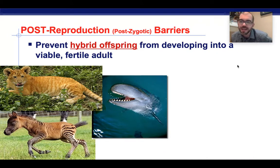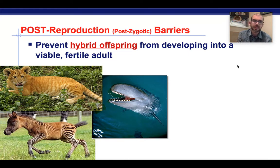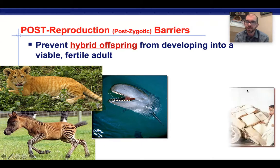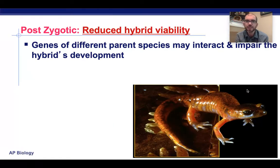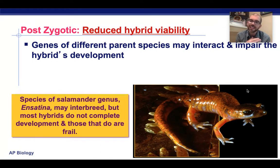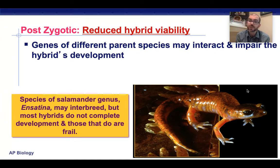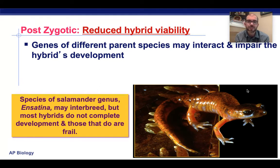Now let's look at postzygotic barriers — instances when sperm does combine with egg, but the species isn't able to continue on. This is how we get hybrids like the tigon, the zorse (a zebra and a horse), and a wolphin (a whale and a dolphin). The first postzygotic barrier is reduced hybrid viability, where sperm meets egg and you do produce offspring, but the offspring are so unviable and weak that they don't survive to reproductive age. This happens a lot with salamanders — sperm and egg of different species combine in fresh water, but the offspring is too frail to survive.